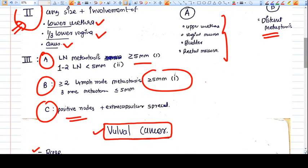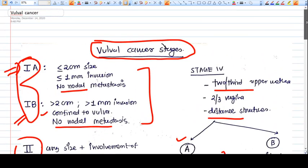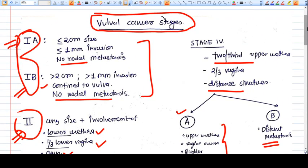Stage 3 is somehow tricky, so you need to remember this thing. Simply you can remember that A, B, C means: A means there are lymph node metastasis, a few lymph nodes are involved; in Stage 3B, more lymph nodes are involved; and Stage C means extracapsular spread. So this was all about vulval cancer. Thank you, friends.